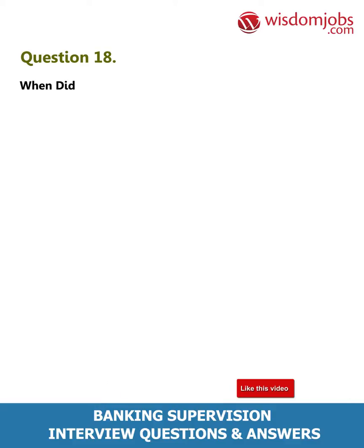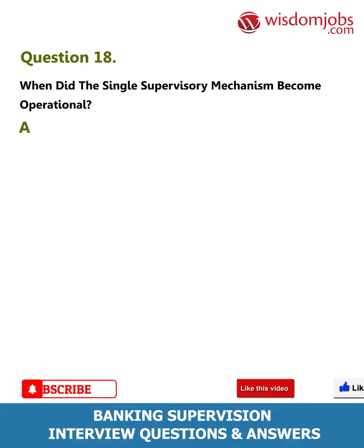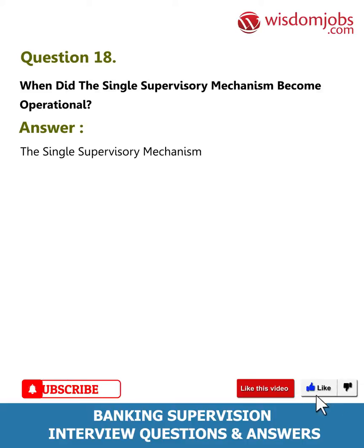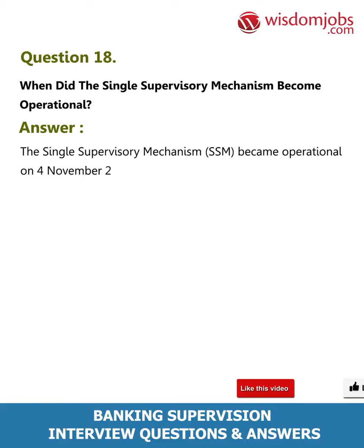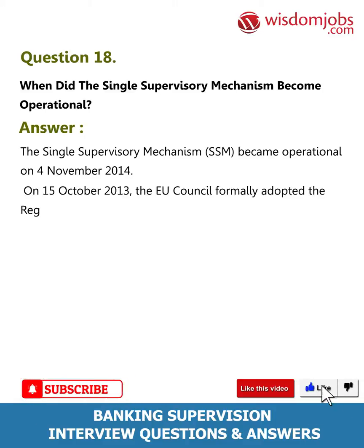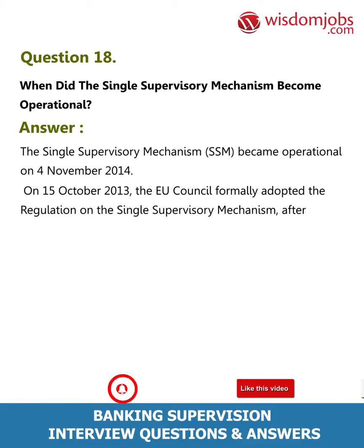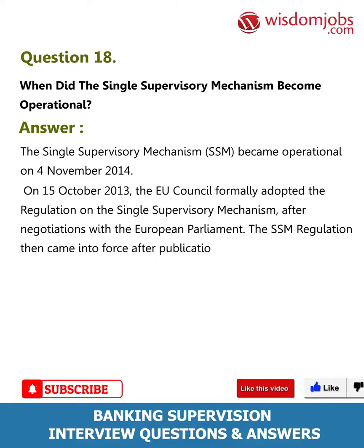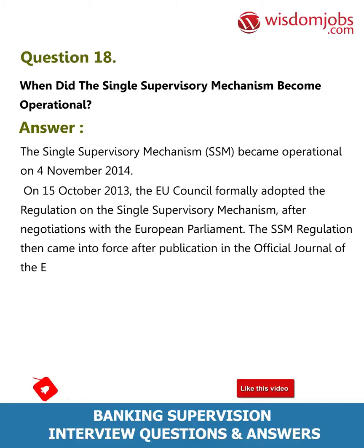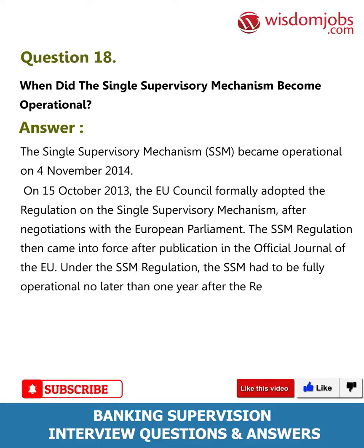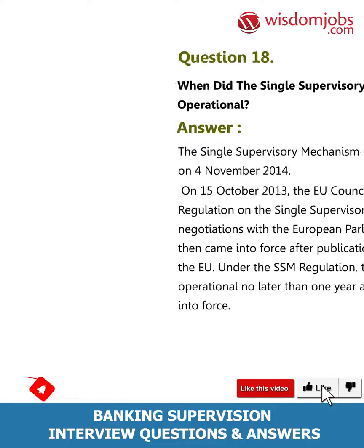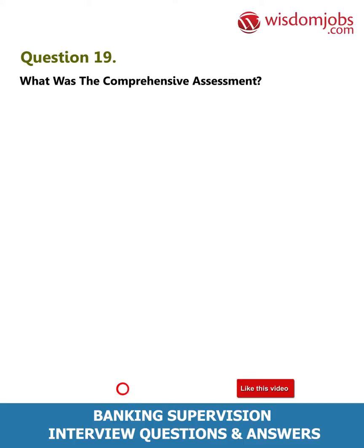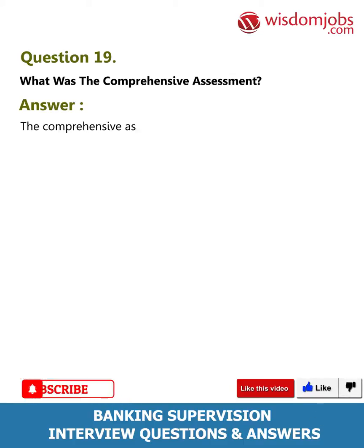Question 18: When did the Single Supervisory Mechanism become operational? Answer: The SSM became operational on the 4th of November 2014. On the 15th of October 2013, the EU Council formally adopted the regulation on the SSM after negotiations with the European Parliament. The SSM regulation then came into force after publication in the Official Journal of the EU. Under the SSM regulation, the SSM had to be fully operational no later than one year after the regulation entered into force.